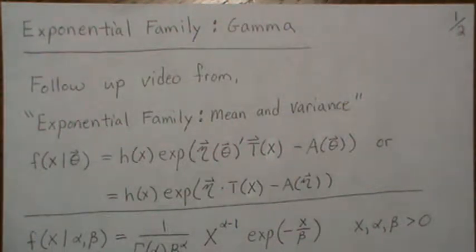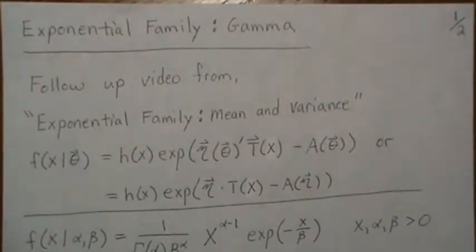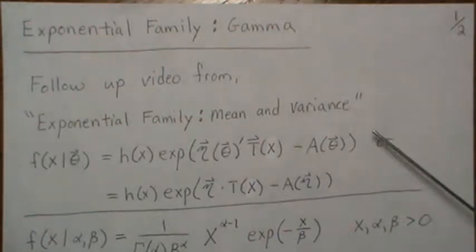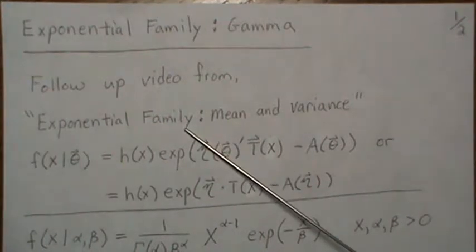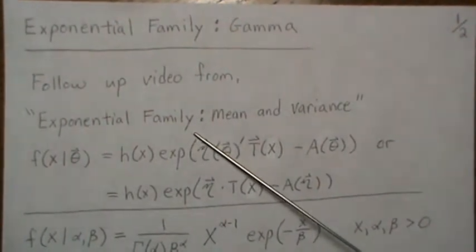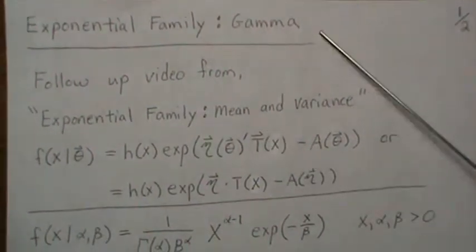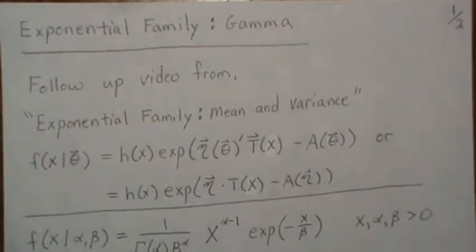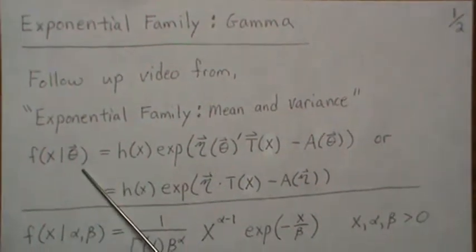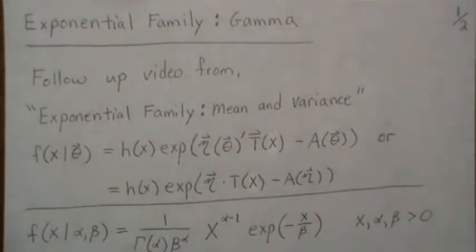In this video we're going to look at the exponential family of distributions, specifically the gamma distribution within the exponential family. This is a follow-up video from a video where we calculated the mean and variance of a generic exponential family distribution, and we're going to show that those techniques also work for specific distributions. If the density or probability mass function can be written as one of these two forms, then it's considered part of the exponential family.